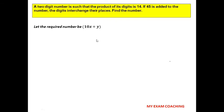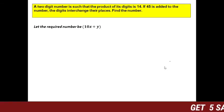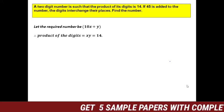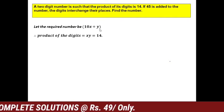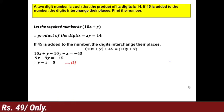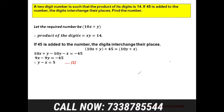The conditions given: the product of the digits is 14, so x × y = 14. If 45 is added to the number, the digits interchange: 10x + y + 45 = 10y + x. Rearranging: 10x + y − 10y − x = −45, which simplifies to y − x = 5. This is equation 1.